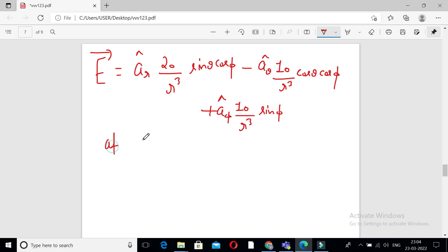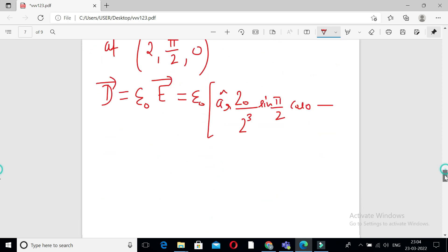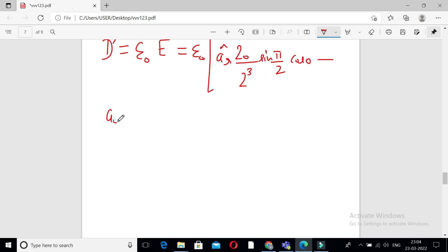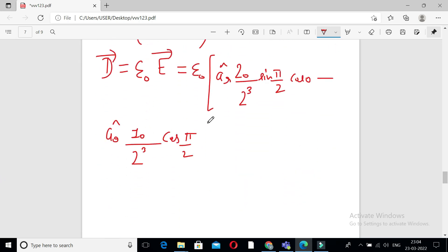D is equal to epsilon naught E vector, which is equal to A R cap 10 upon 2 cube into sine pi by 2 into cosine 0 minus A theta cap 10 upon 2 cube cosine pi by 2 into cosine 0.